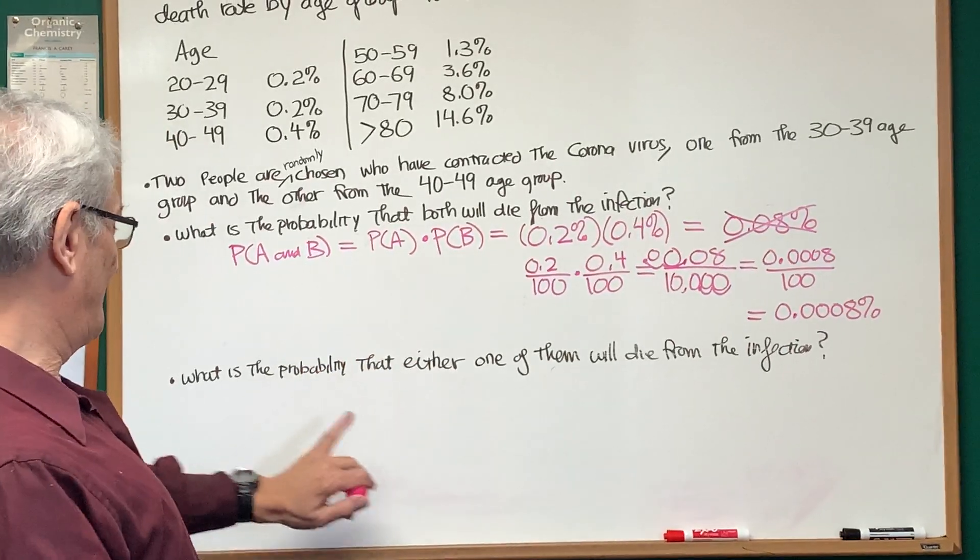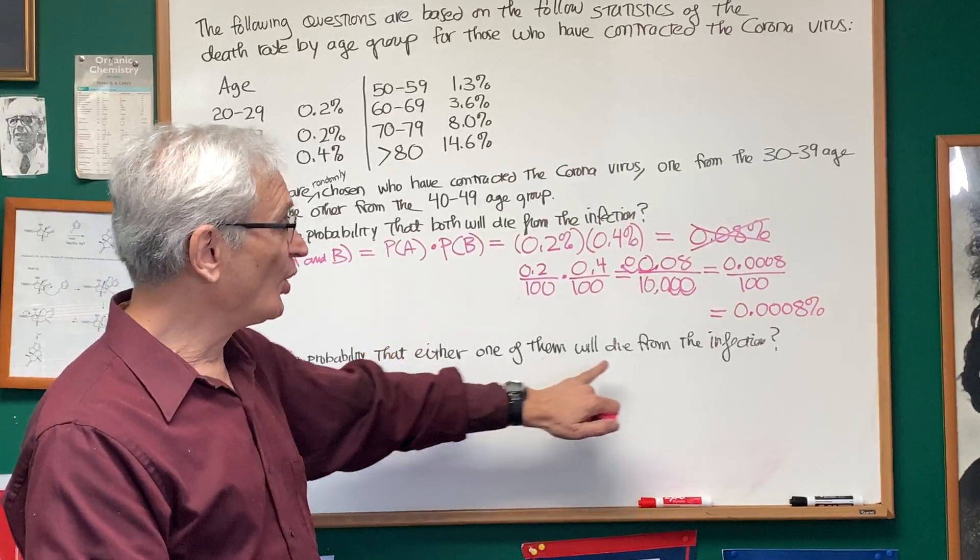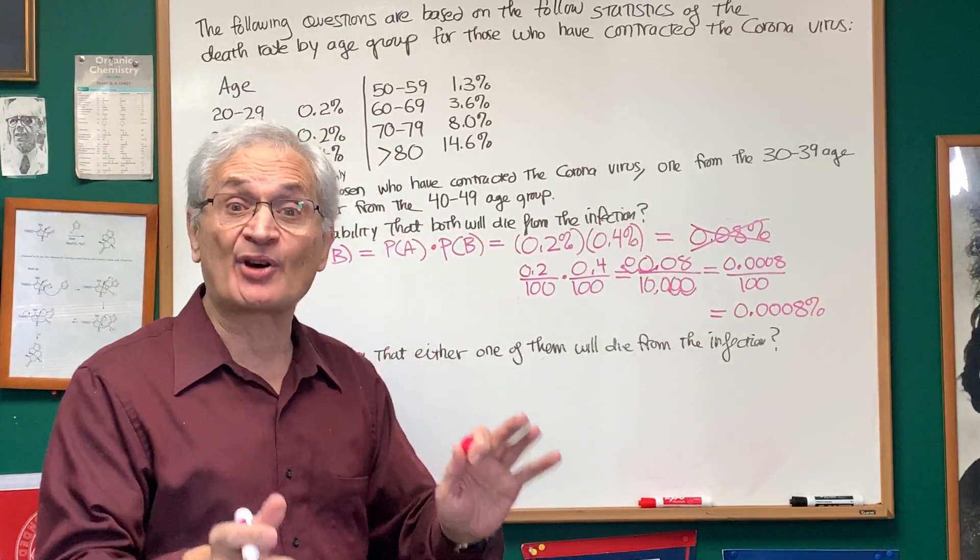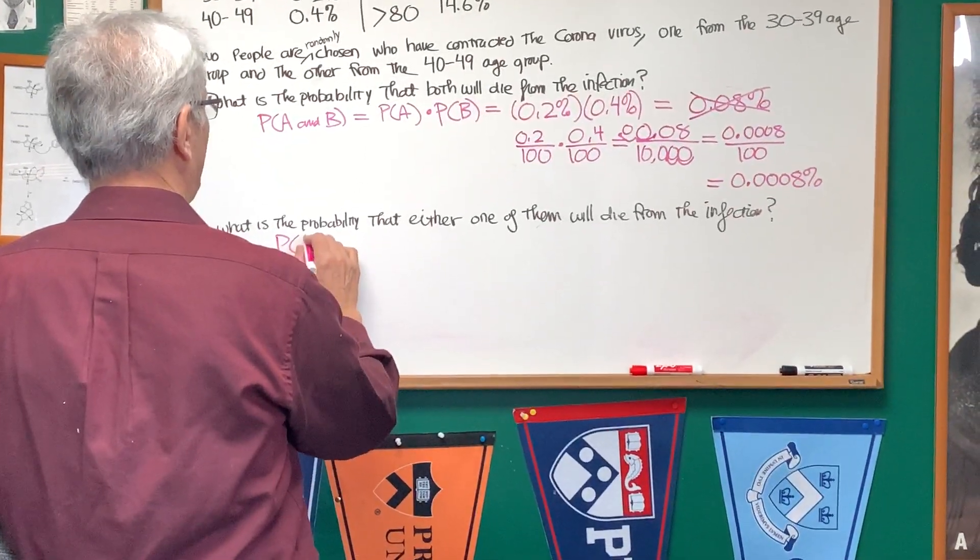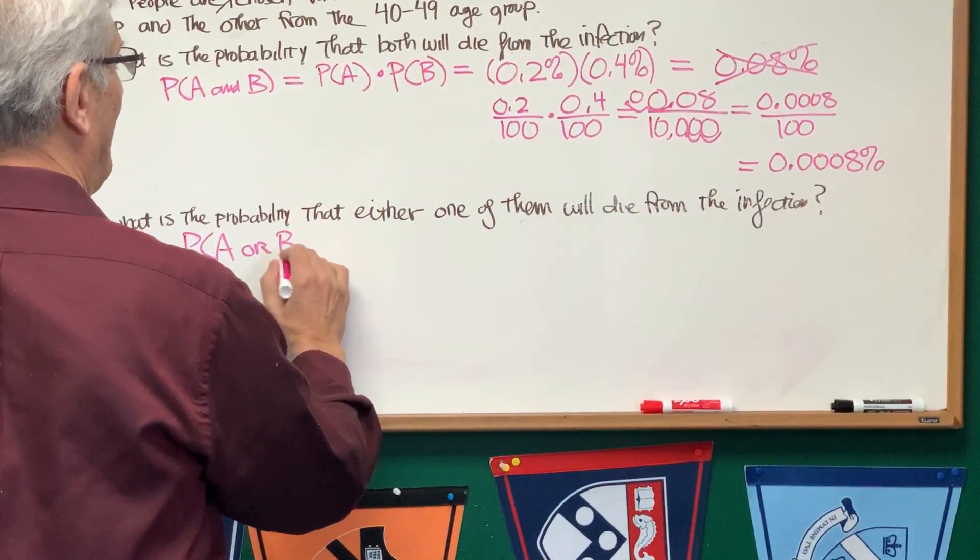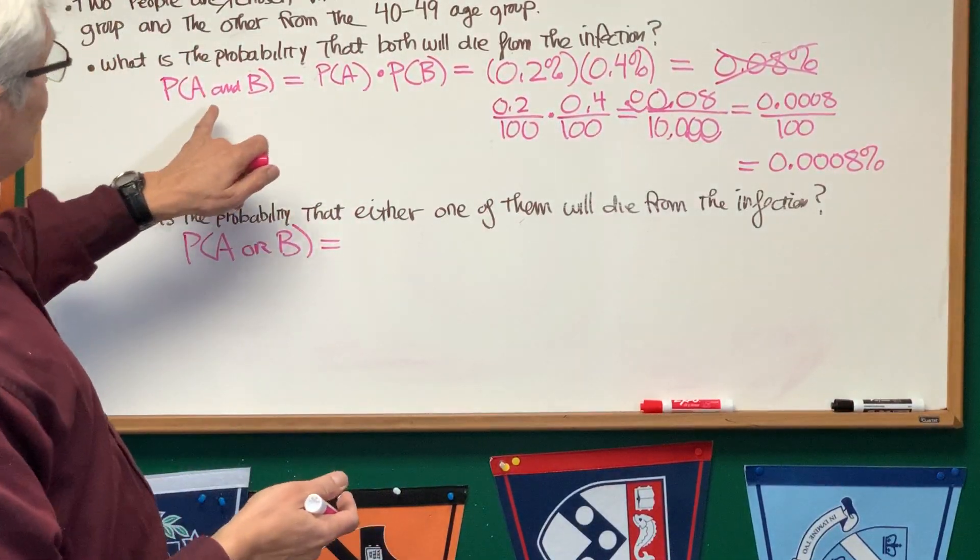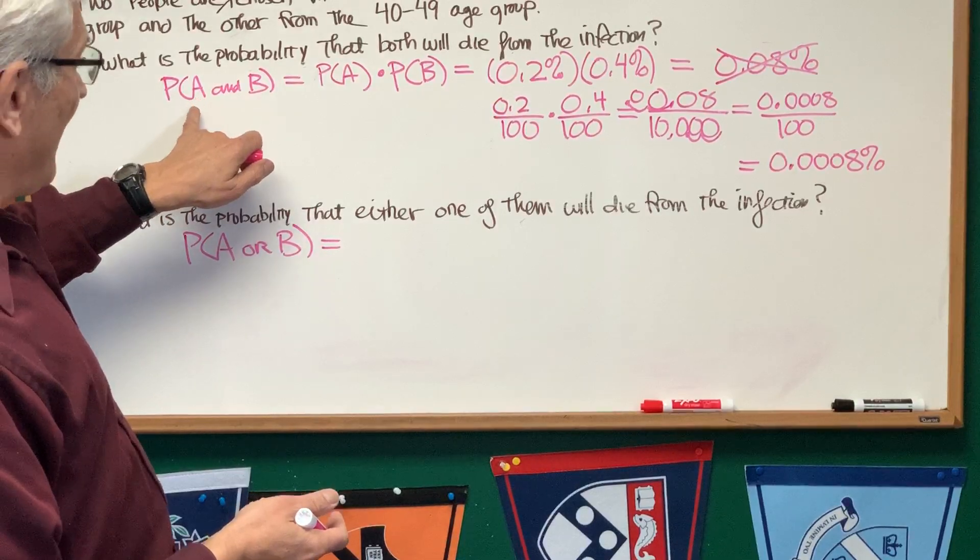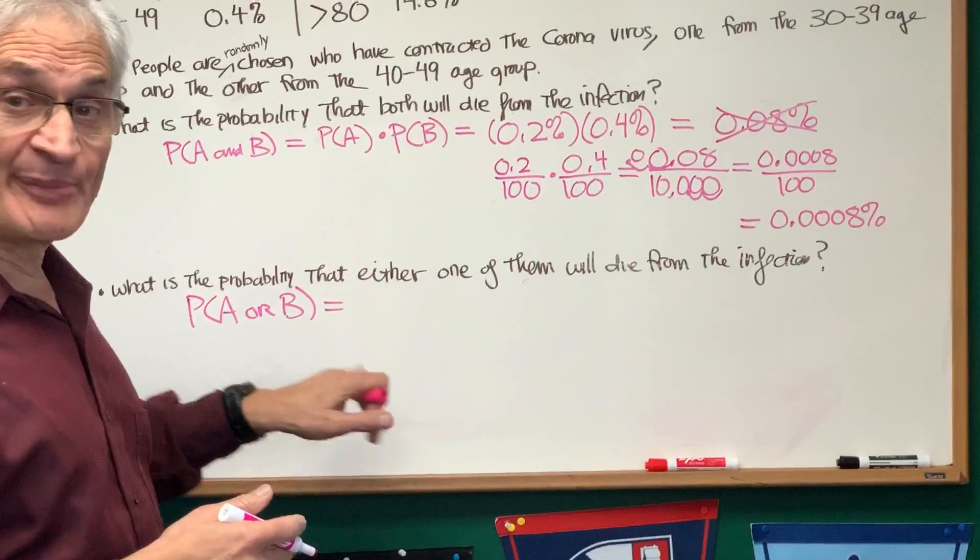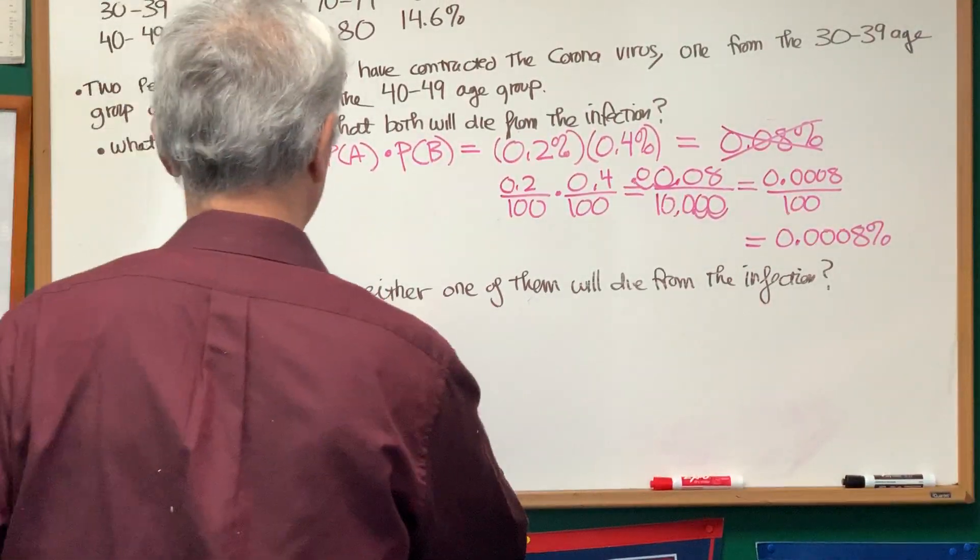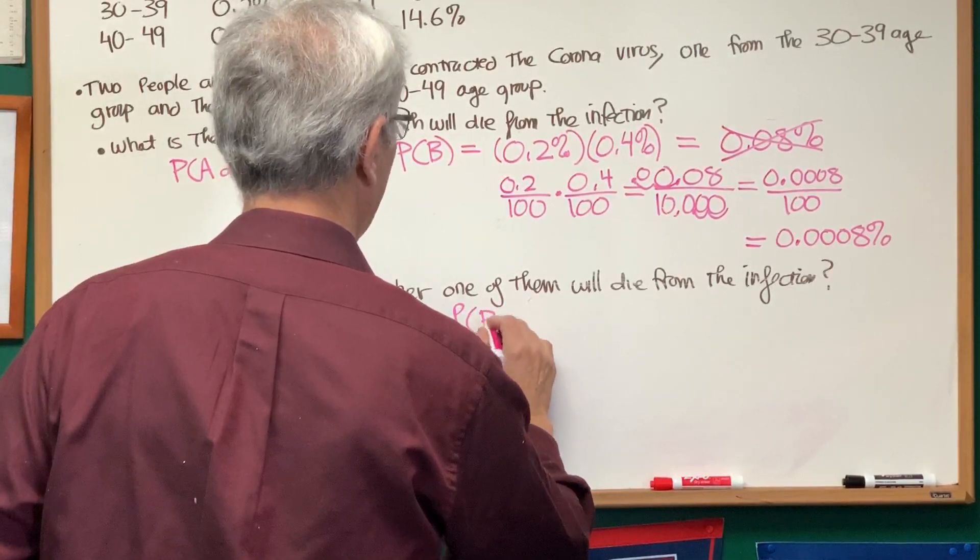Second part of the problem: What is the probability that either one of those two people chosen will die from the infection? Not both, but either one. So we want the probability of A or B. It's standard in probability class, you'll see it in the textbooks: probability of A and B for independent events is the product of the probabilities. Probability of A or B is the sum of the probabilities. So this is going to be the probability of A plus the probability of B.